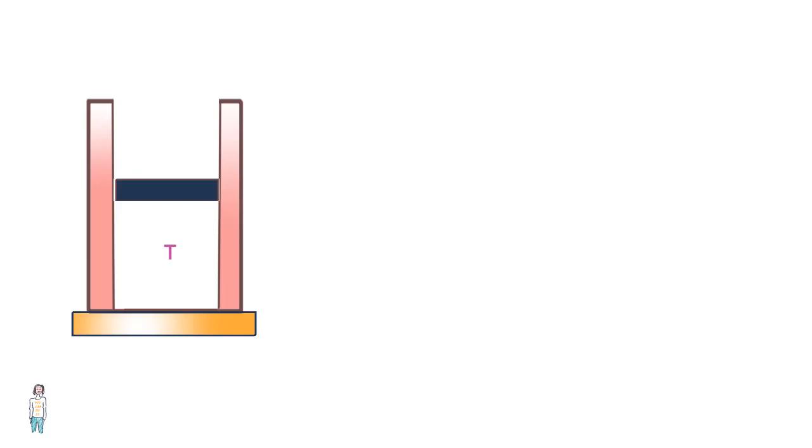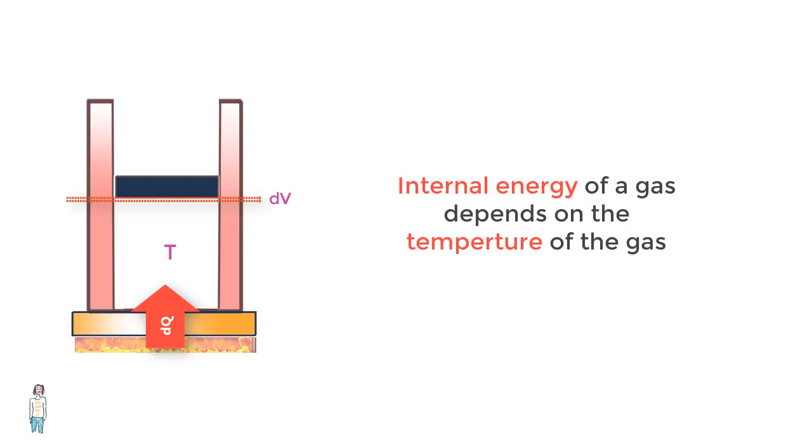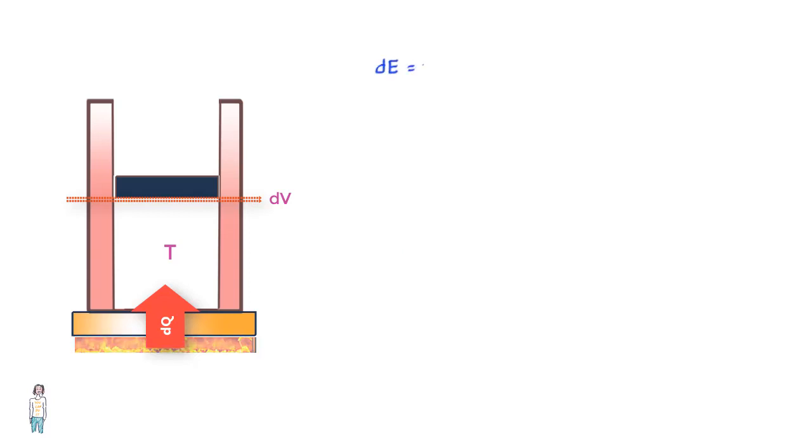Let us say we bring about an infinitesimal expansion in an ideal gas and we do so by adding a very small amount of heat dQ just enough so that the temperature of the gas does not change. We know that the internal energy of an ideal gas depends on temperature only so we can safely assume that there is no change in the internal energy of the gas. So using the first law of thermodynamics, dE is equal to dQ minus dW, we can say that the work done by the gas dW is equal to dQ or the heat added.